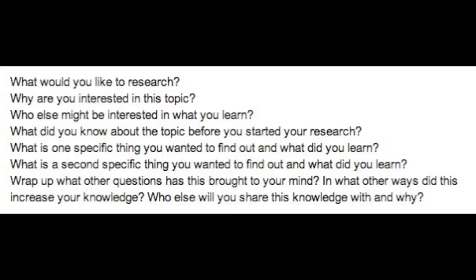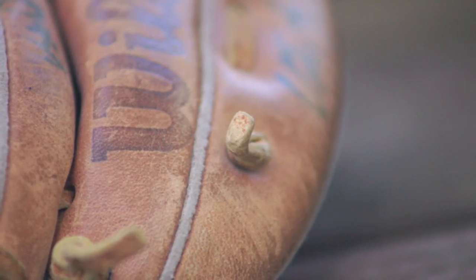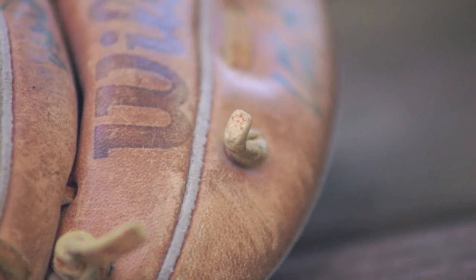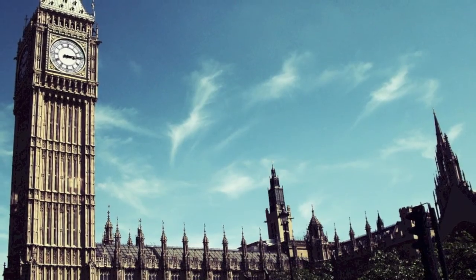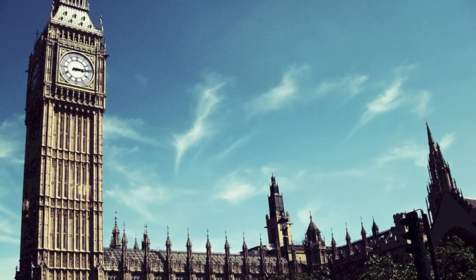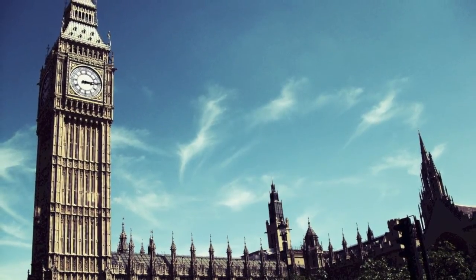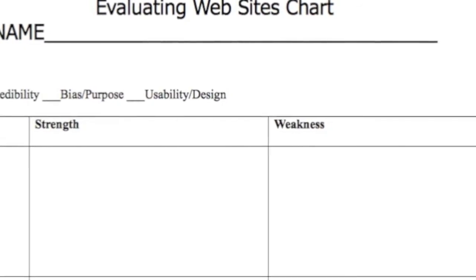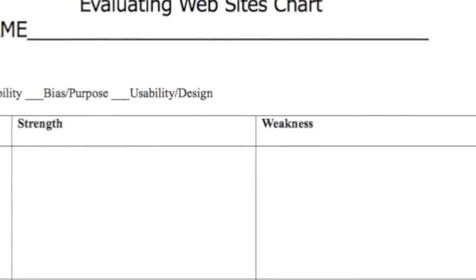The seventh grade students submit a proposal to research a topic of personal interest. The topics vary widely from sports to hobbies and even Big Ben. They use Diigo to bookmark their sites, Google Docs to gather their research notes, presentation software to build slides, and Citation Machine to document their sources. They have to let me know what they'd like to research, why they're interested in the topic, who else might be interested in what they learn, what they know about the topic before they start their research, and two specific things they want to find out. When they share this information, they wrap up by letting us know what other questions this brought to their mind and in what ways this increased their knowledge. They come full circle by evaluating the sites they used in their research using the forms from the sixth grade, which helps them recognize which sites were the strongest.